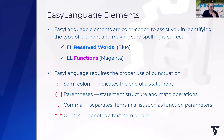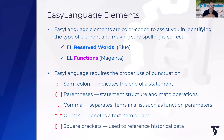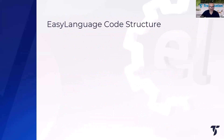We have quotation marks used for labels or text. We also have square brackets used to reference historical data — though we probably won't use square brackets today. Some of these punctuation rules are important when you start writing EasyLanguage because they give your code structure and TradeStation will know exactly what to do.